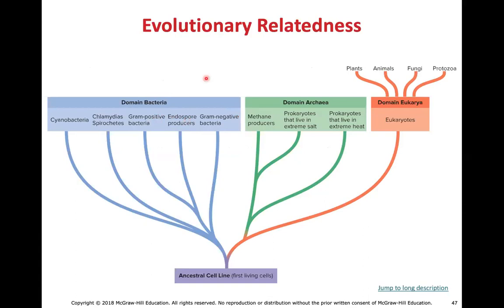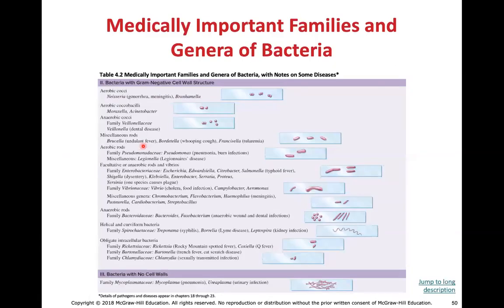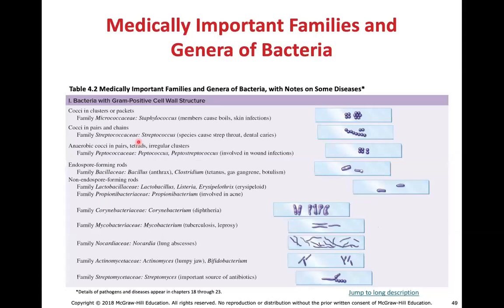Evolutionarily speaking, prokaryotic cells were one of the first cells to develop. Looking at the domain of bacteria, the major families include gram-positives, gram-negatives, spore producers, chlamydia, spirochetes, and cyanobacteria. For exam one, stop at slide 47. The last few slides cover medically important families of bacteria that we will come back to when discussing bacterial infections in unit three.